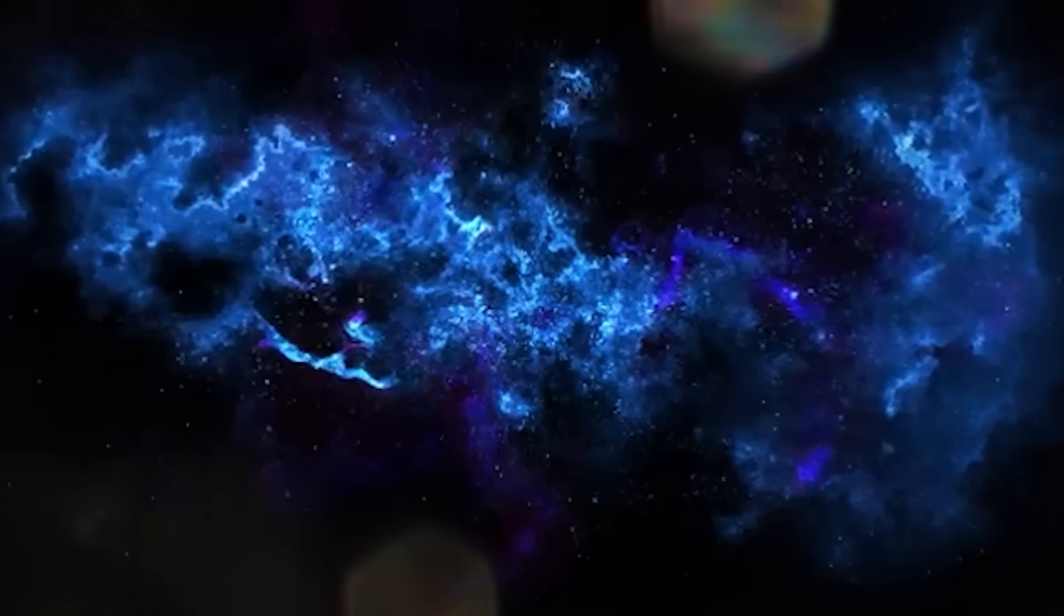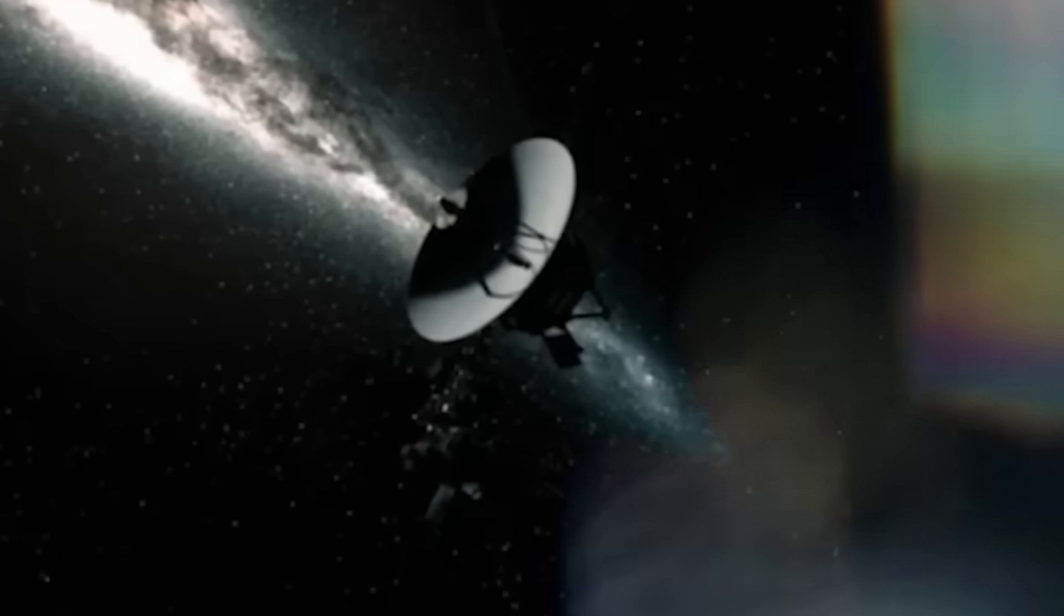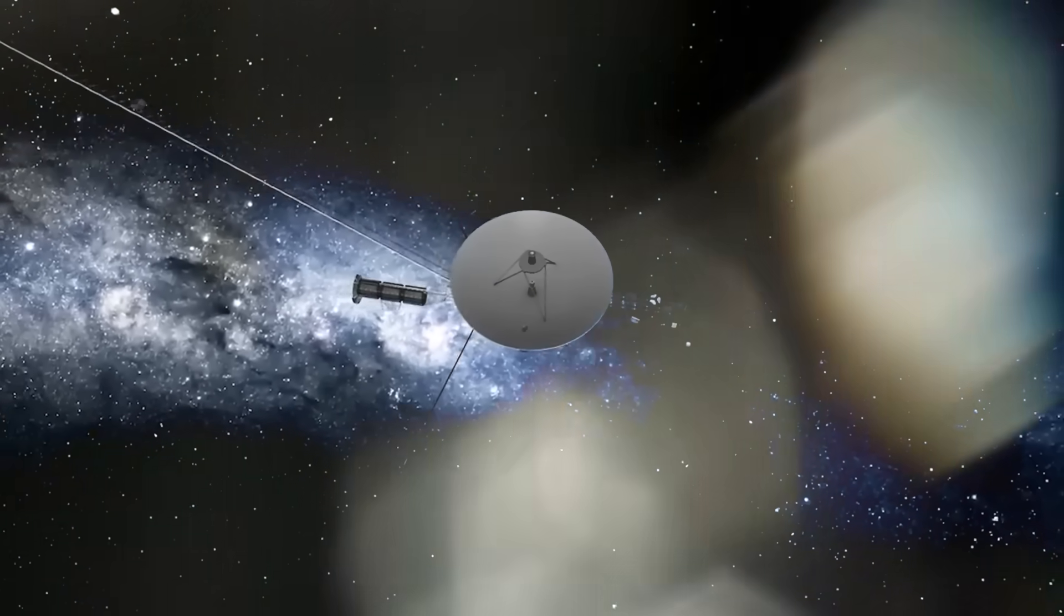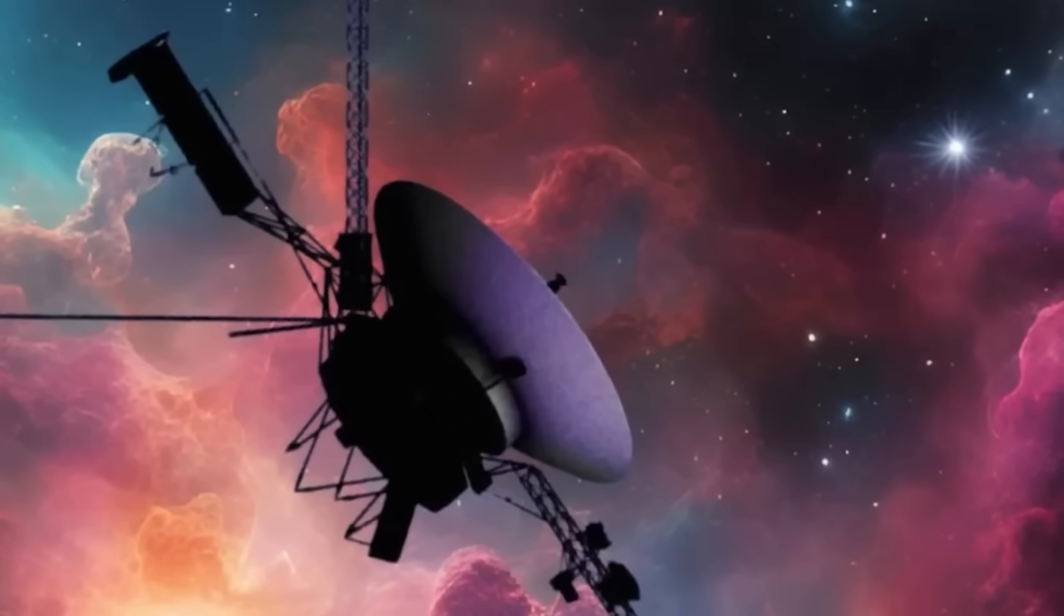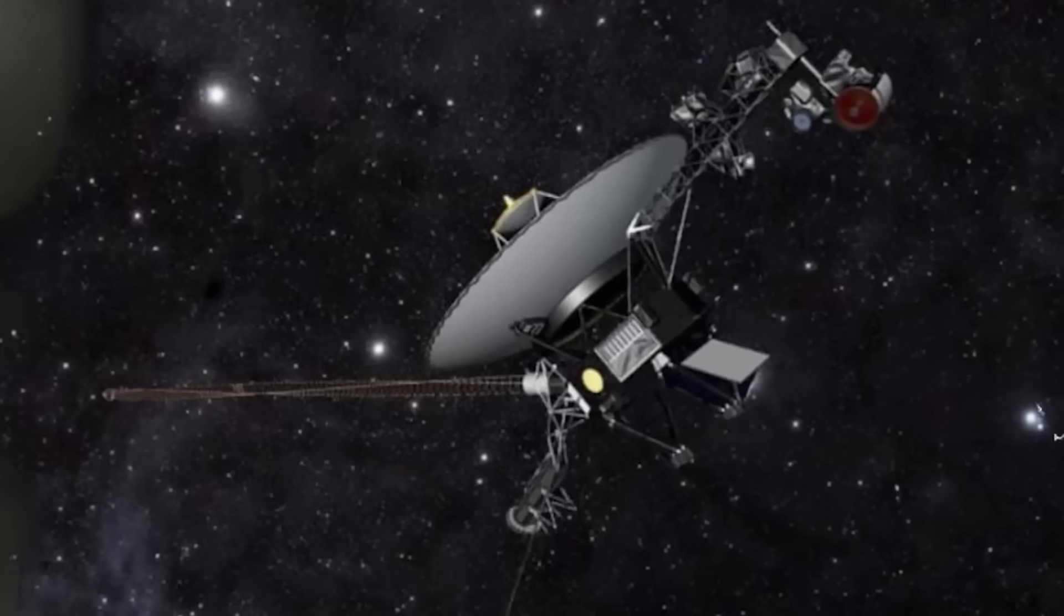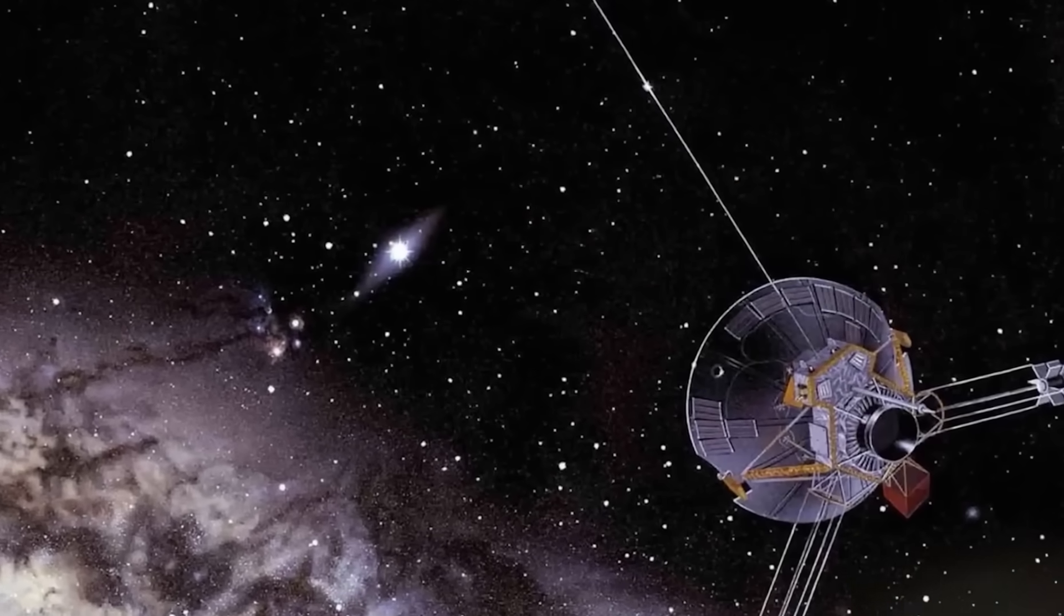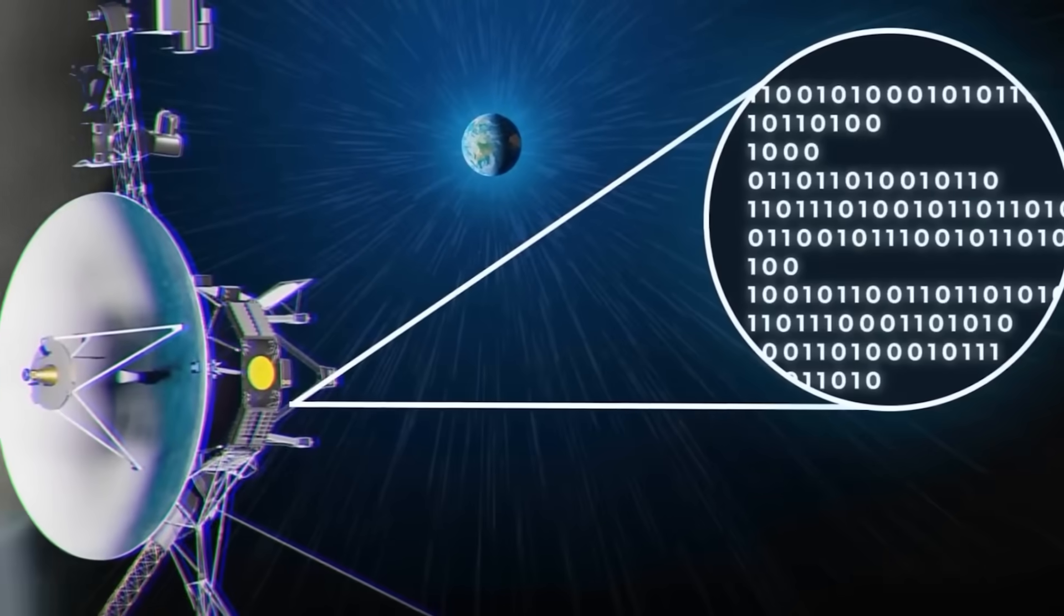Their memory? Just 69 kilobytes. Their processor weaker than a modern calculator. And yet they navigated gravity assists like acrobats in a silent void, slingshotting through the gas giants and beaming back data on moons, rings, magnetic fields and plasma waves. Over time, engineers turned off heaters, cameras, and even scientific instruments. Each shutdown a small funeral for a part of the mission. But still Voyager 1 spoke, until recently, when its voice changed.